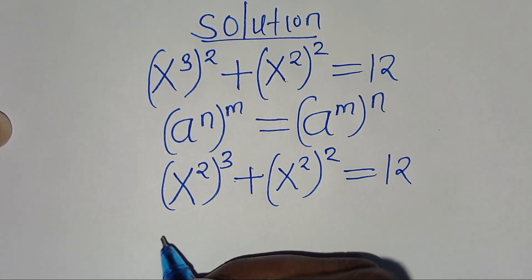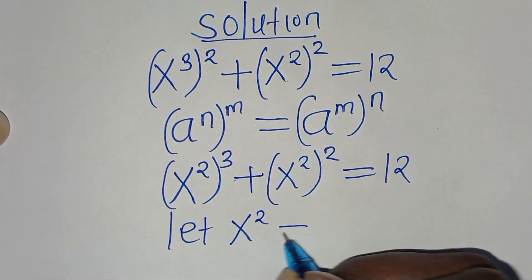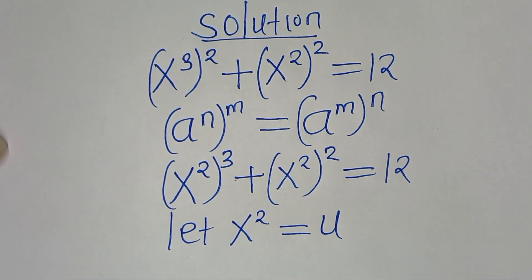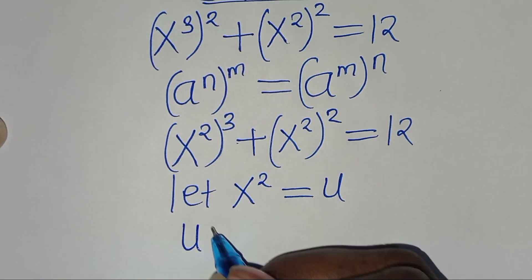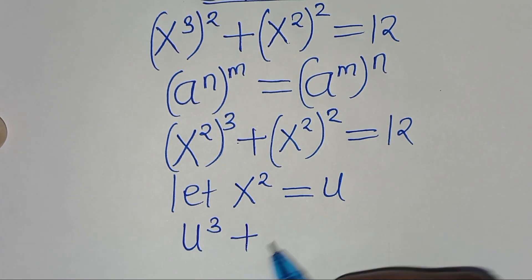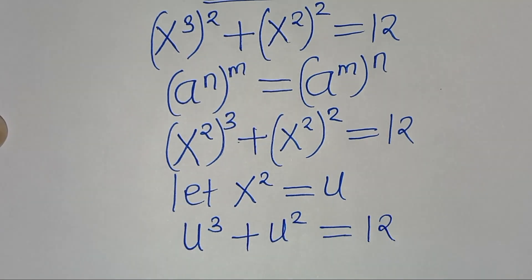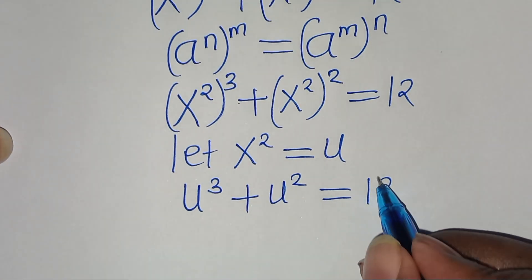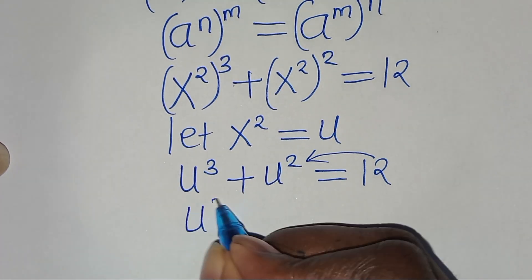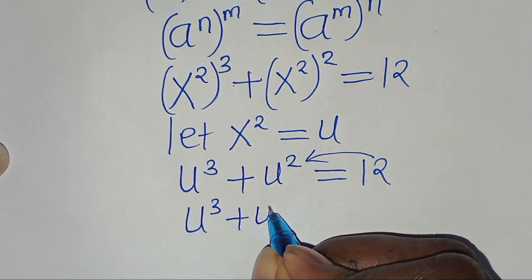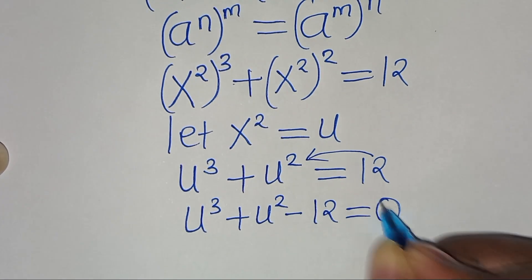The next step from here, we can let x to the power of 2 be equal to u. Substituting u, we have u to the power of 3 plus u to the power of 2, this is equal to 12. Let's take 12 to the left hand side so that now we have u to the power of 3 plus u to the power of 2 minus 12, this is equal to 0.